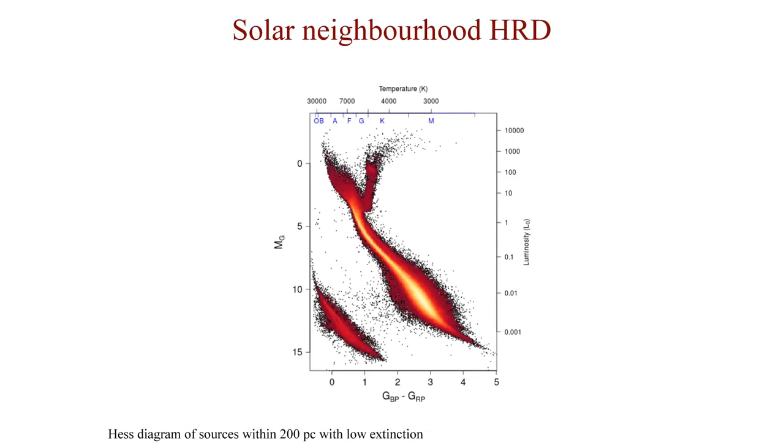So on the first slide you see the HR diagram of sources within 200 parsec with low extinction selection. The red color scale represents the square root of the stellar density. The correspondence of the Gaia colors in effective temperature are provided on the top axis,